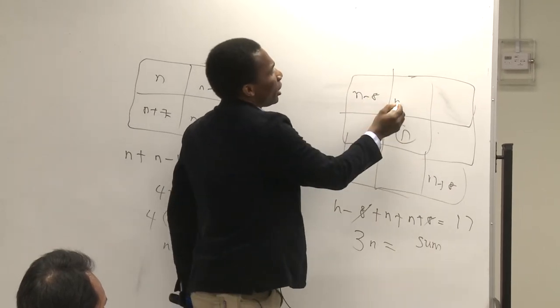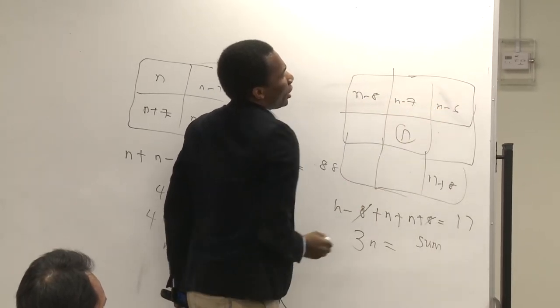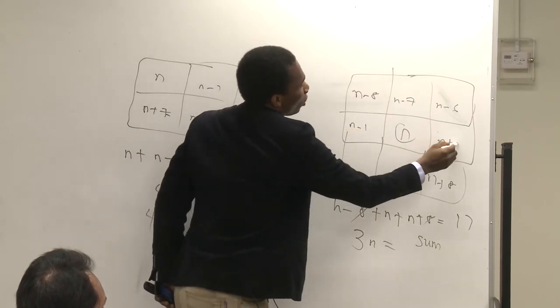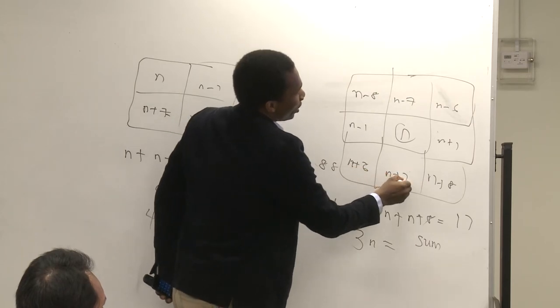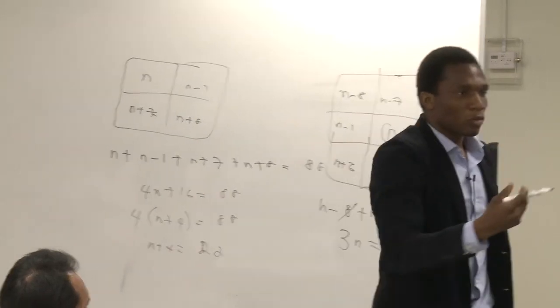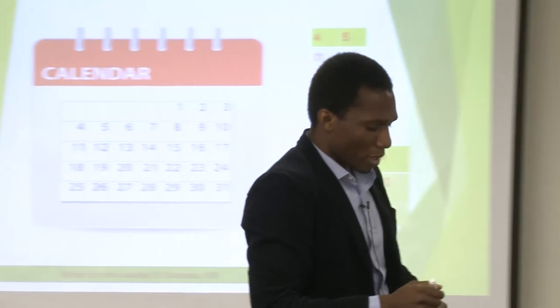I know here is n-8, here is n-7, and here is n-6. Here is n-1, n+1, and here is n+6, n+7. So once you give me some sum, I can give you the remaining date.